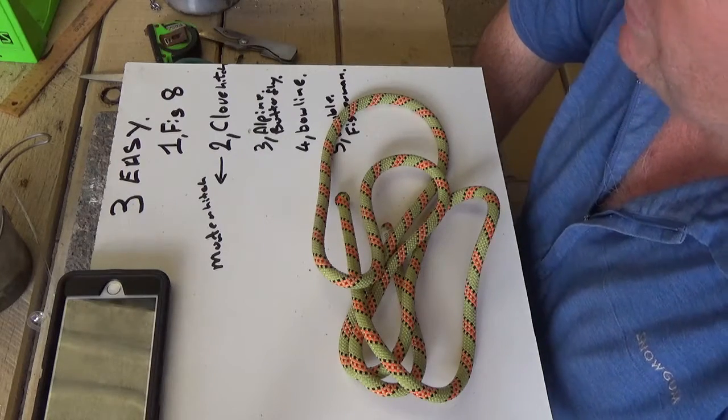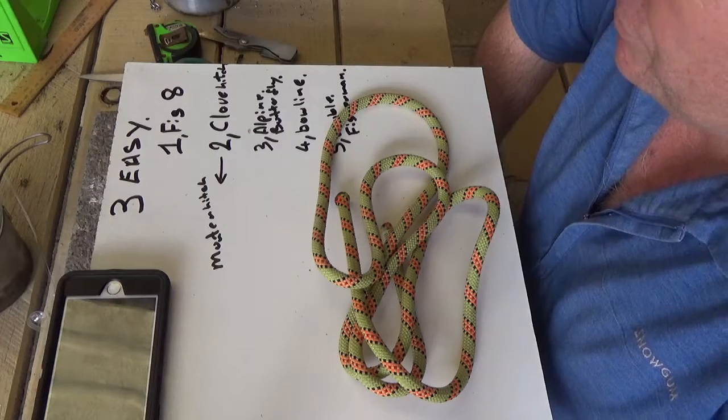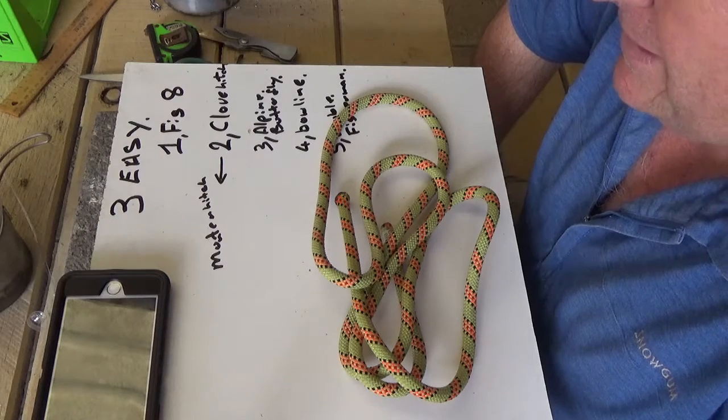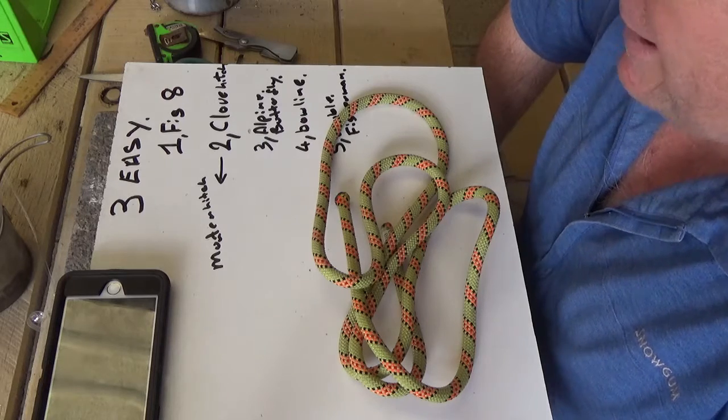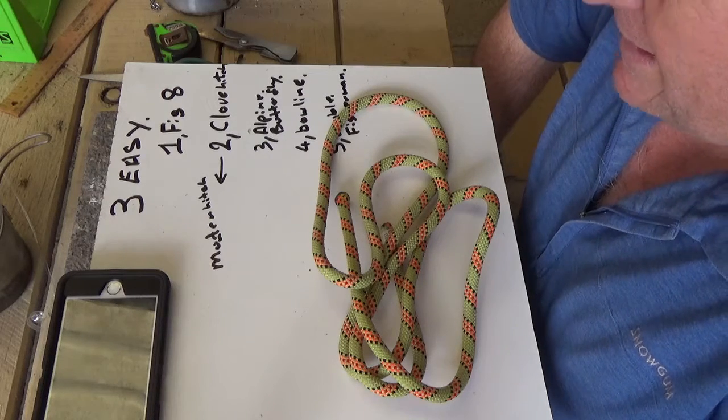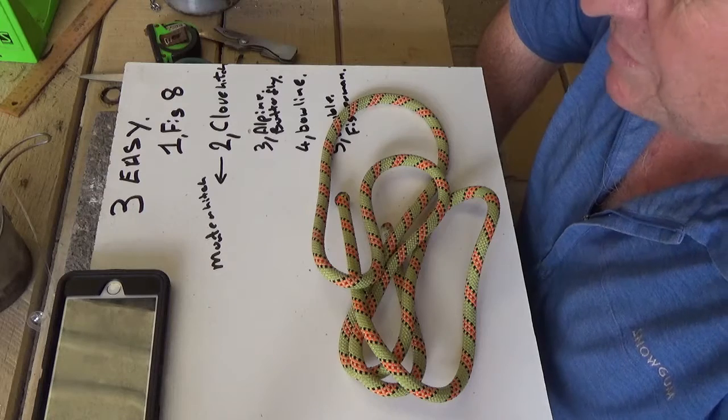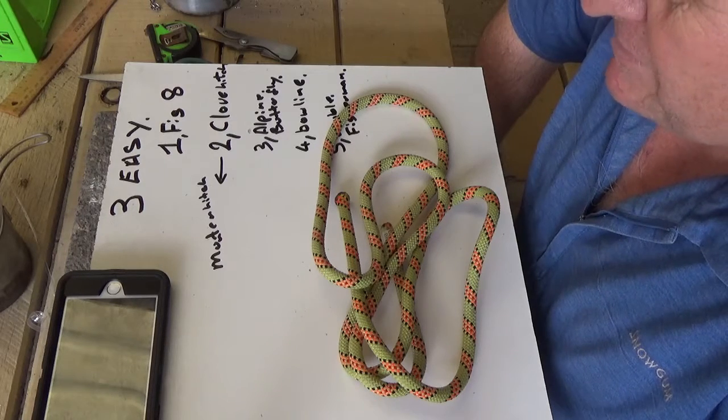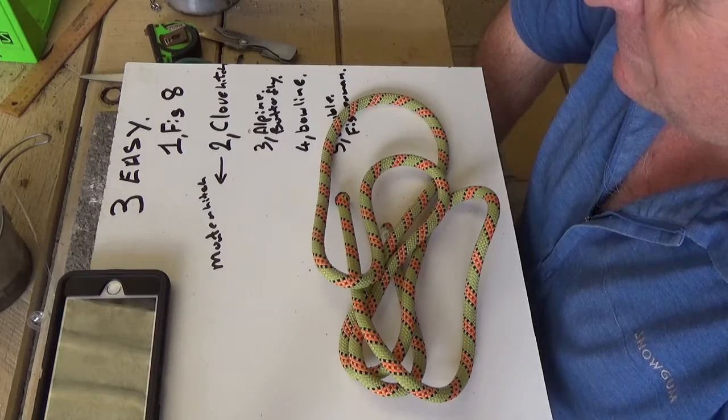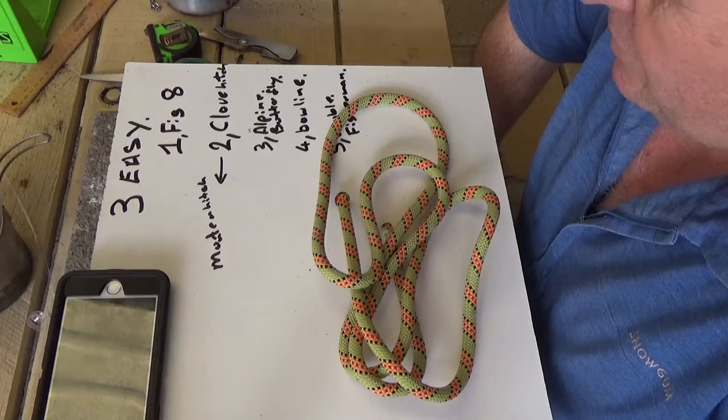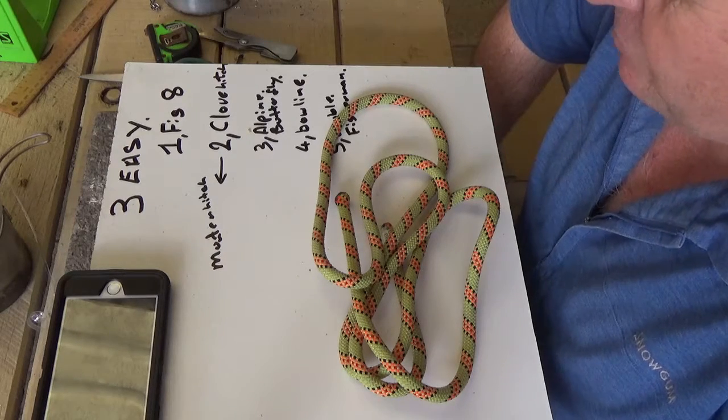And the most important thing with knots is what I call my three easy rules. It should be easy to tie, it should be easy to untie after they've been loaded, and easy to recognize, which is important if you have groups and you're relying on someone else to un-rig or re-rig if you're in a sort of vertical or tough terrain situation.